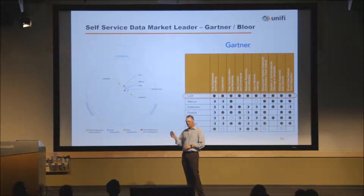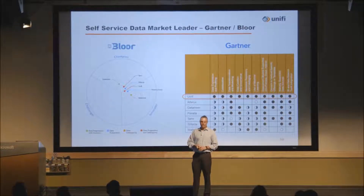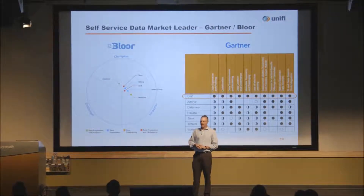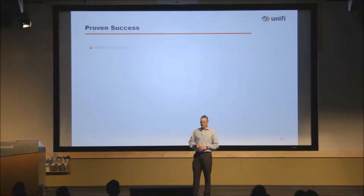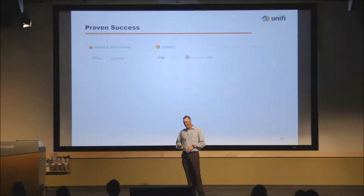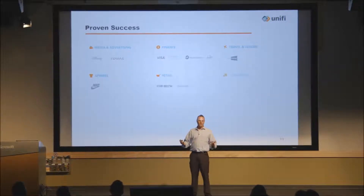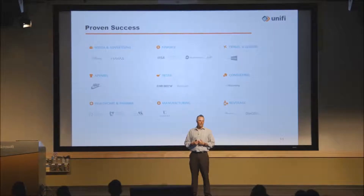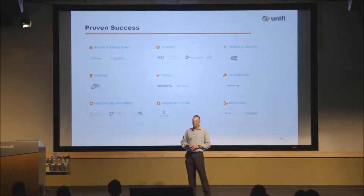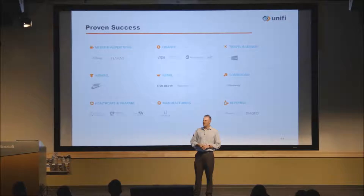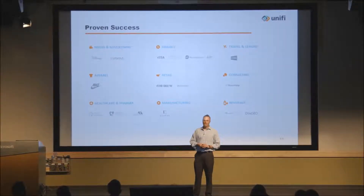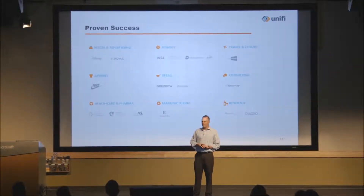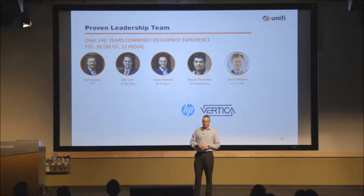Here's the competitive landscape and how we've been positioned. We're ranked number one across both Bloor and Gartner — obviously we use that every chance we get. From a verticalization standpoint, we're a horizontal product, so we have customers in pretty much every vertical. There's really no analytic use case that we don't believe our product can support. We have seen some signals in the market and have a couple of out-of-the-box solutions, one in healthcare and one in retail, but essentially we're across pretty much every vertical.